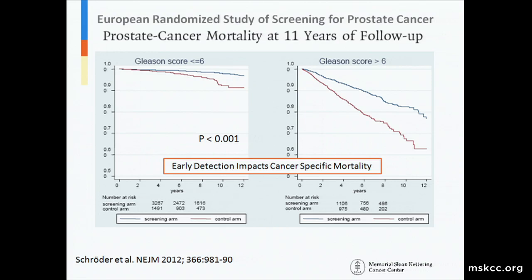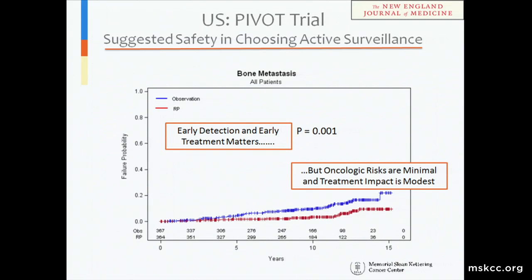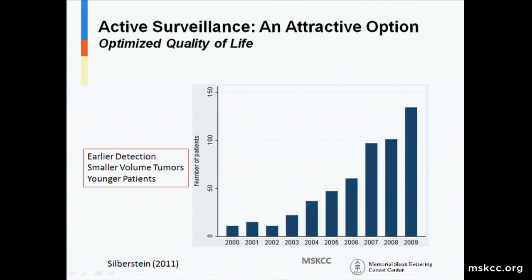Data from the European ERSPC trial shows that early detection has positively impacted the disease because it leads to early treatment. Even in the PIVOT trial, which many people cite when talking about risks for prostate cancer, early detection and early treatment matter for patients in terms of endpoints such as metastasis-free survival. However, the oncologic risks are fairly minimal for most patients and the treatment impact is modest, so we're trying to insert a new form of therapy with minimal quality-of-life impact.